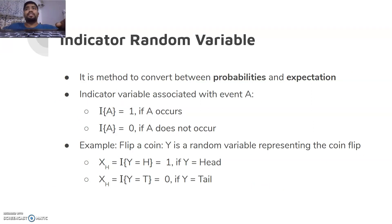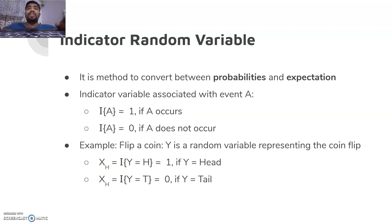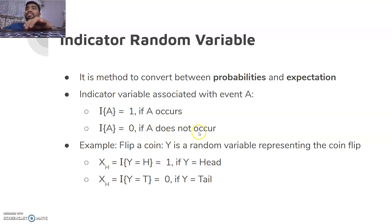To understand expectation and expected running time, we use the indicator random variable - a method to convert probabilities into expectations. We were working with probabilistic analysis, then used a randomized algorithm to bring randomness to the input, and now we have an expected running time. We need a relation between probabilities and expectation. The indicator random variable I(A) is associated with a particular event A: it equals 1 if event A occurs and 0 if it does not.